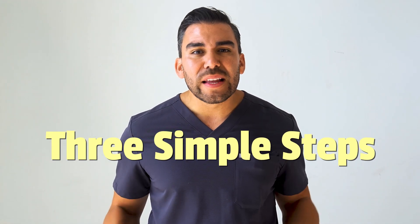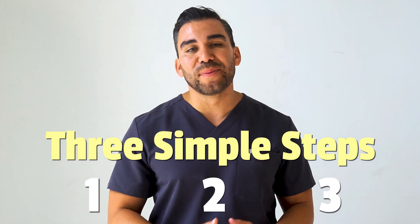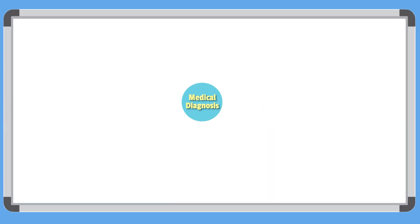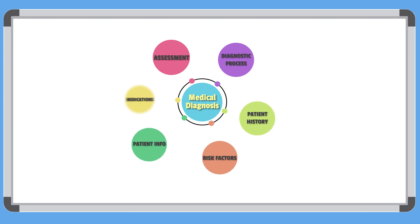Ready to create your own concept map? Let's break it down into three simple steps. Step one is to choose the main topic — this could be a patient care plan, a medical diagnosis, or even a breakdown of nursing responsibilities. Step two is to determine secondary subsections — these are key categories related to your main topic. For a patient care plan, this might include assessment, diagnostic process, patient history, and risk factors.